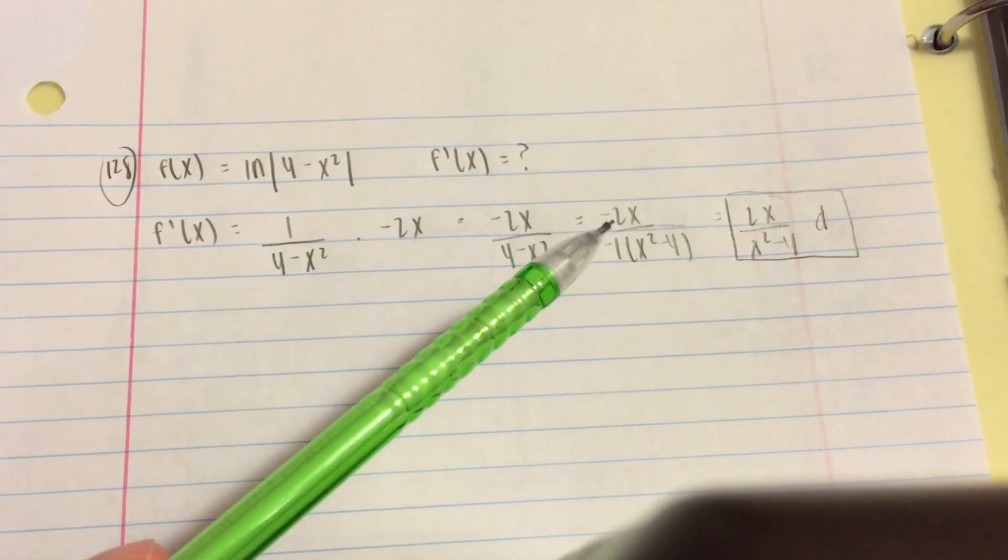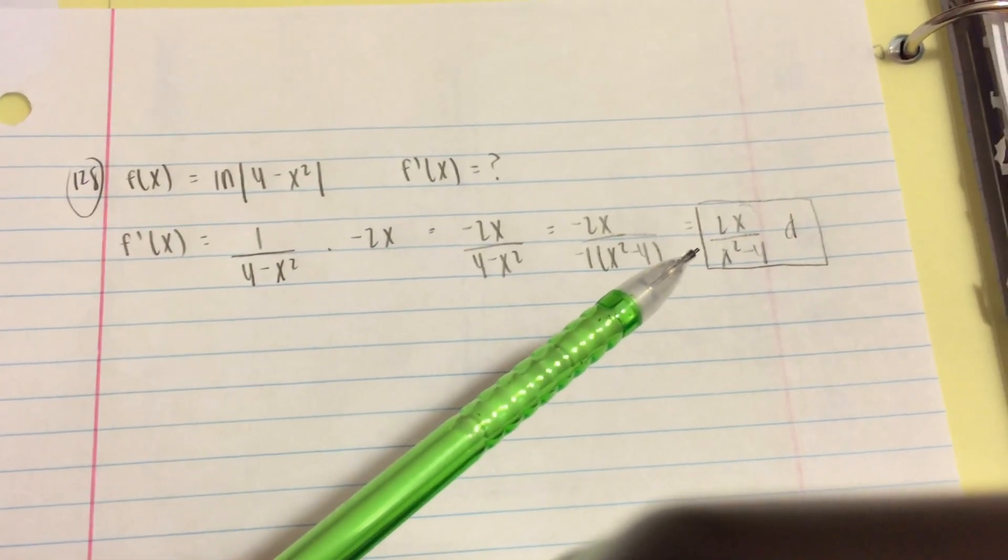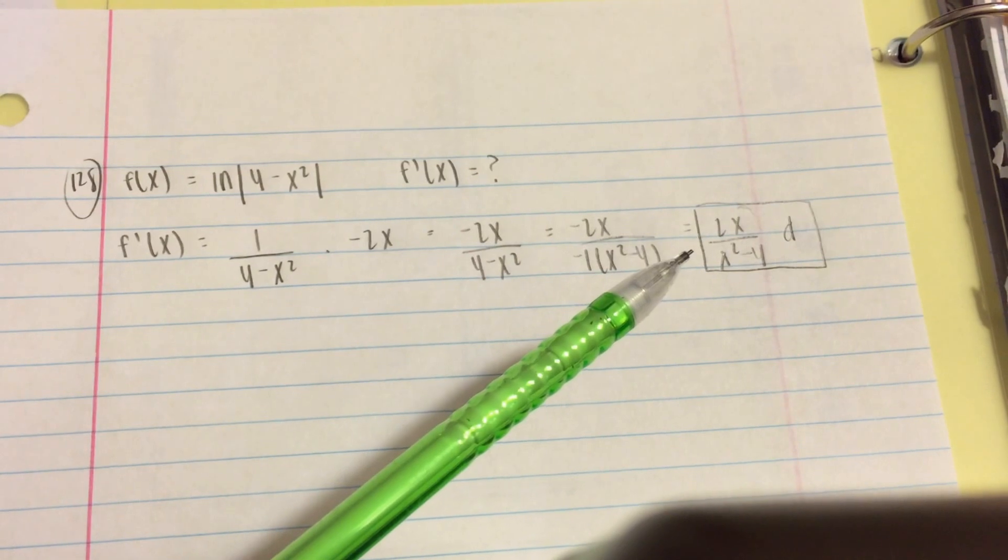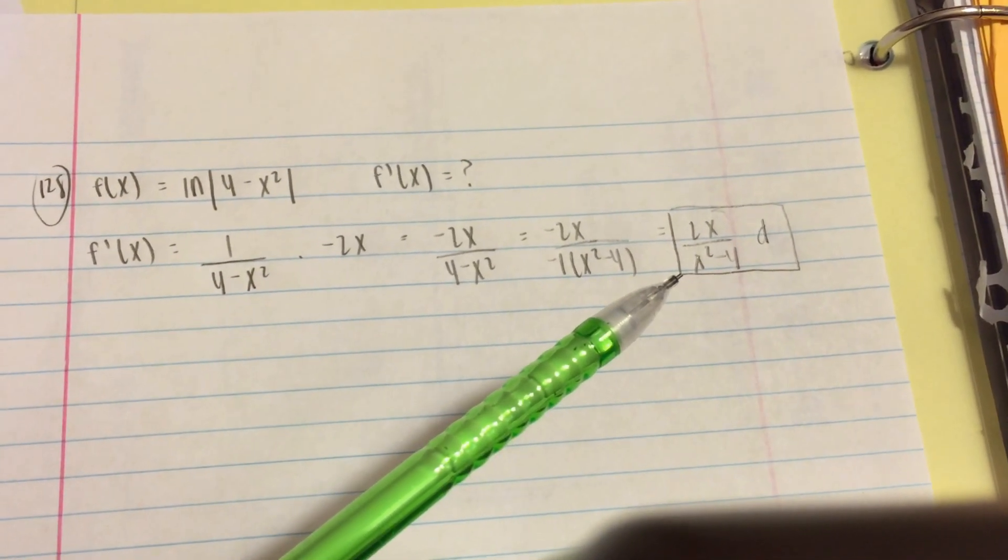When you simplify that, the negatives cancel and you get 2x/(x² - 4). That is answer choice D.